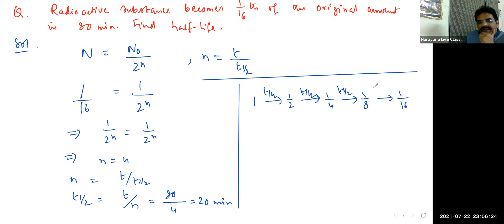How many half-lives did we count? There are 4 half-lives to reach 1/16th of the substance. These 4 half-lives equal 80 minutes total, so T_half = 20 minutes.